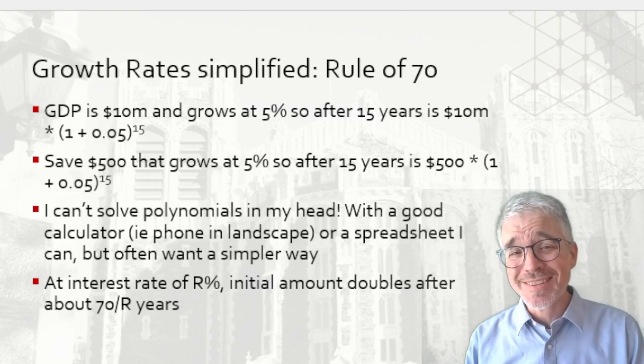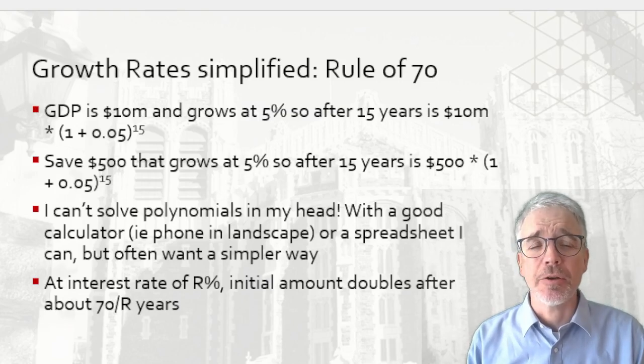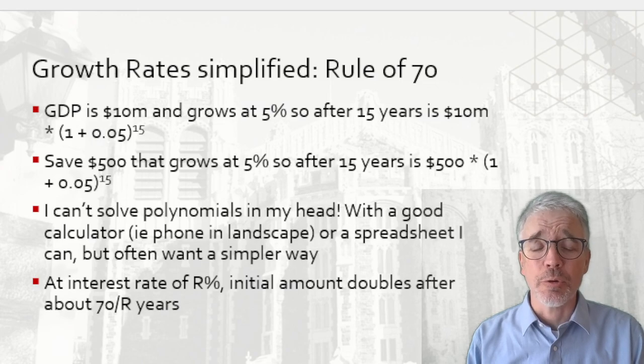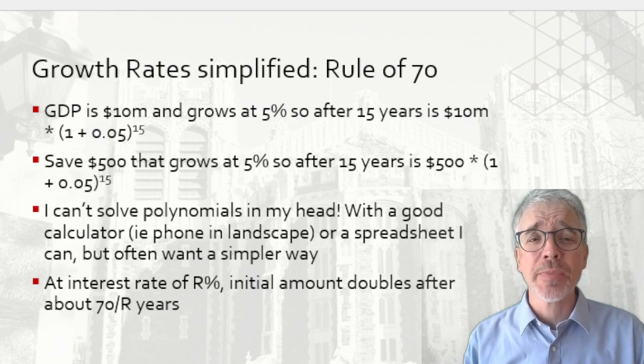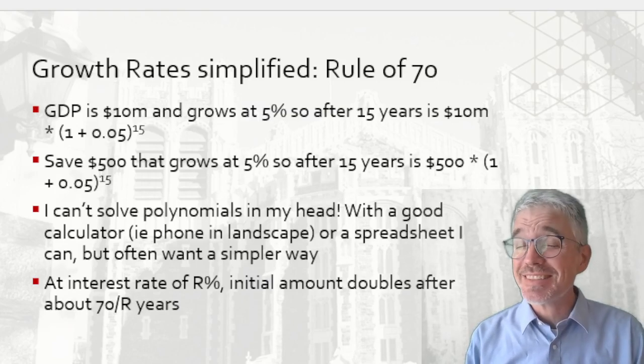If the interest rate were 10, then the investment would double in 70 divided by 10, 7 years. If the interest rate or the growth rate is 3.5%, the initial investment will double in, let's see, what's 70 divided by 3.5? That's 20.